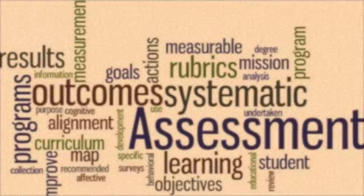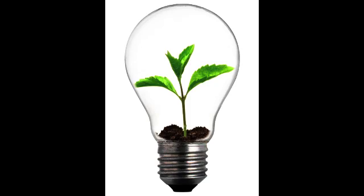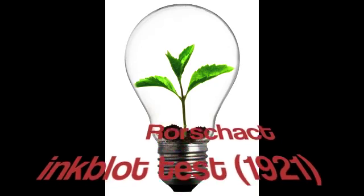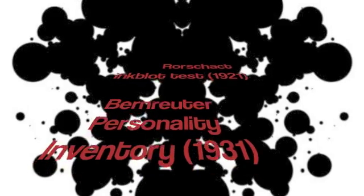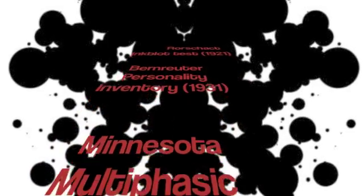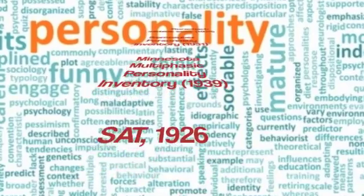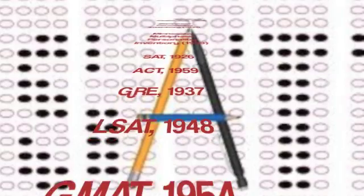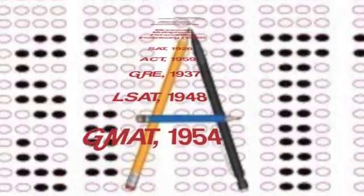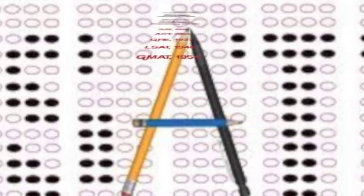From 1920 to about 1960, these earlier assessments were further extended and provided us with a multitude of assessments of specific variety, such as projective, personality, inventory, and many other standardized group-administered achievement and aptitude tests — for example, the SAT and the GRE.